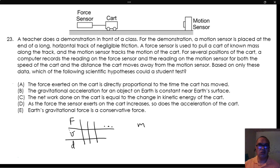Let's go option by option to see whether the hypothesis can be tested using this data. Option A: The force exerted on the cart is directly proportional to the time the cart has moved. There is no data for time being measured according to the description of the demonstration. This is not a valid option.